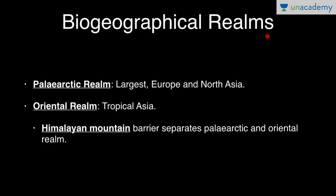There are six biogeographical realms. First is the Palearctic realm — the largest — covering Europe and North Asia. The Oriental realm covers Tropical Asia. The Himalayan mountain barrier separates the Palearctic and Oriental realms.